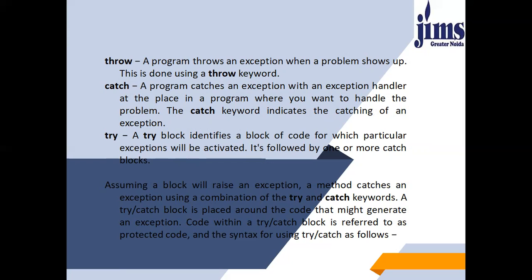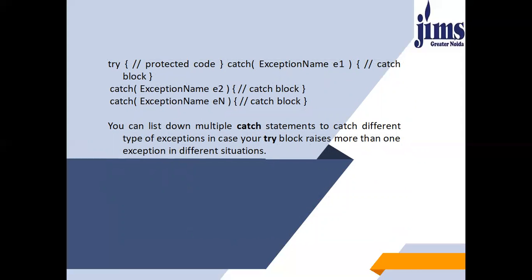A method catches an exception using a combination of the try and catch keywords. A try-catch block is placed around the code that might generate an exception. Code within a try-catch block is referred to as protected code. The syntax is: try, then the protected code; then catch with exception name E1; catch with exception name E2; and catch with exception name EN. You can list multiple catch statements to catch different types of exceptions in case your try block raises more than one exception in different situations.